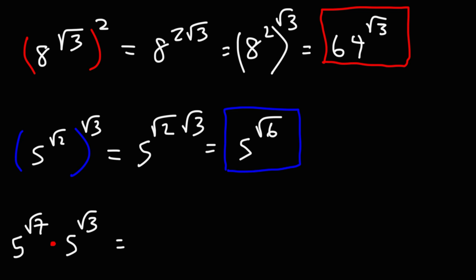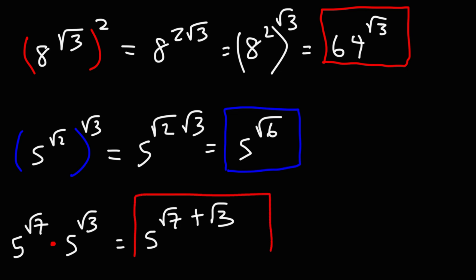For 5^√7 times 5^√3: we have the same bases but different exponents, so all we can do is add the exponents. The result is simply 5 raised to √7 plus √3. We can't simplify this any further, so we leave the answer as 5^(√7 + √3).